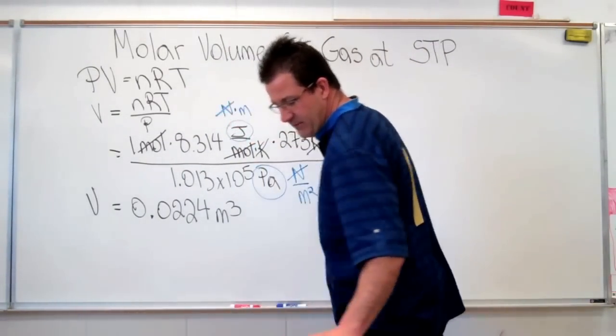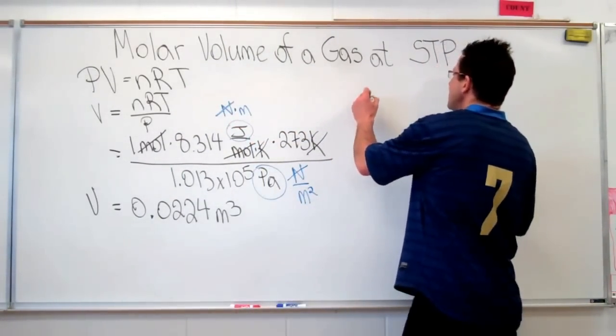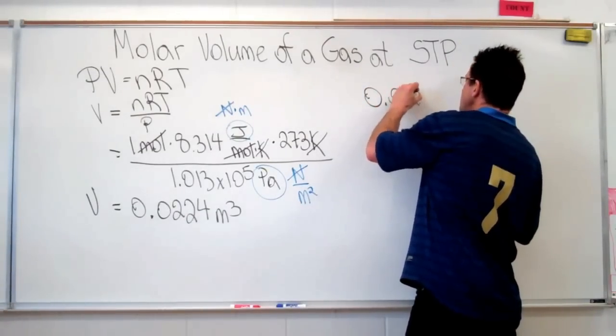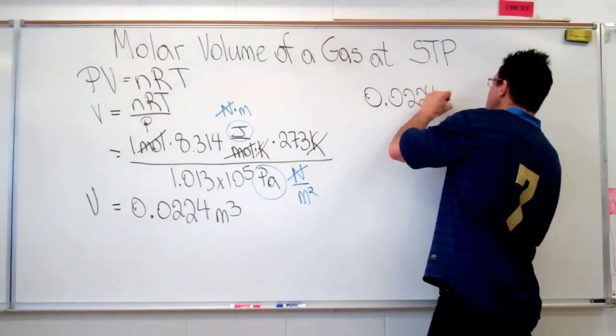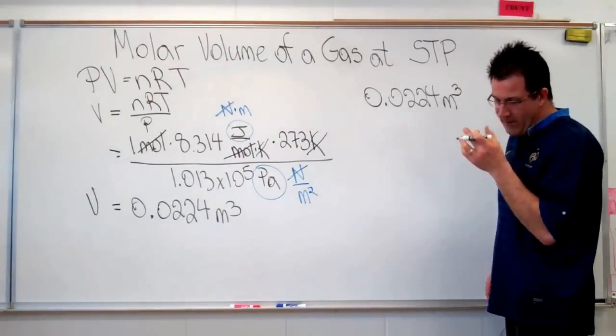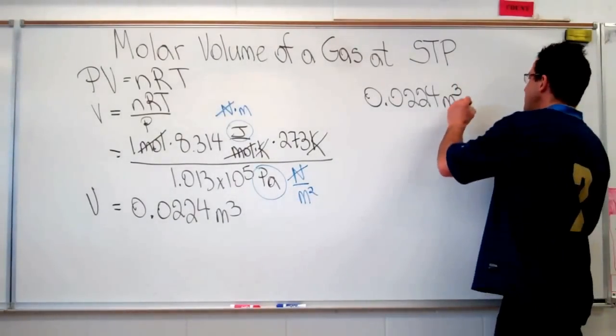And this is how we can do that. It's a simple dimensional analysis conversion. We're going to bring the value up here at 0.0224 meters cubed. And we can convert that into liters because we know that 1 meter cubed is equal to 1,000 liters.